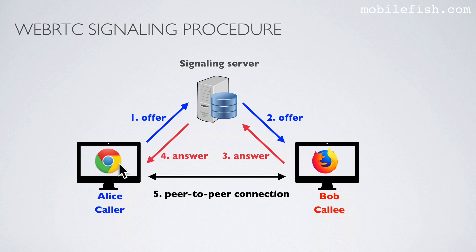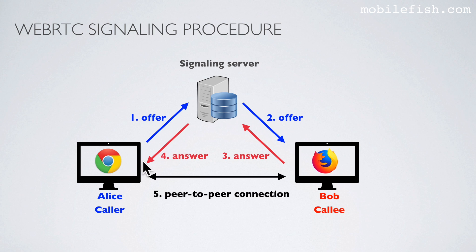Alice initiates the peer-to-peer communication. Her browser creates an offer which is sent to a signaling server and stored in a database. Bob can retrieve this offer from the signaling server. When the offer is received, an answer is created and is also sent to the signaling server. Alice can get this answer from the signaling server, and a peer-to-peer connection can now be established.